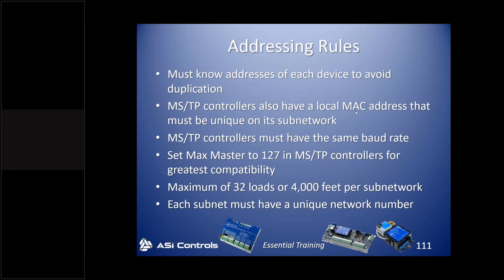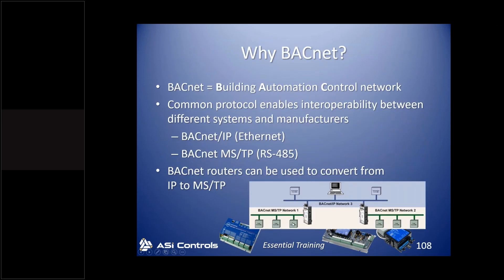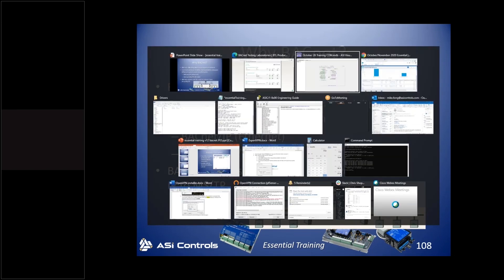Some settings are only relevant for MSTP, including the MAC address — which is very different from a MAC address on a computer's network card. In MSTP, you're almost always going to change the MAC address so that on any local MSTP network every device has a different MAC address. However, one controller on MSTP Network 2 can have the same MAC address as a controller on MSTP Network 1 because they're on different MSTP networks. In ASI Expert, all rooftop controllers have MAC address 1, and that's okay because they're on different MSTP networks.